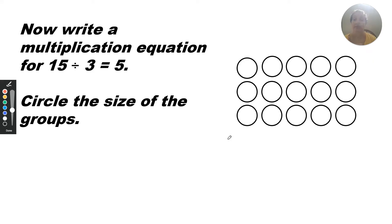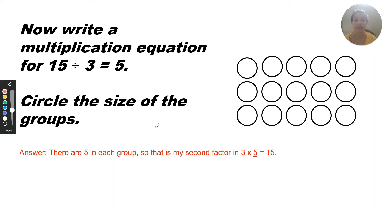Now write a multiplication equation for 15 divided by three equals five. Think about how the division equation is related to the multiplication equation. First, the number 15 is the total — in a multiplication equation, that would go at the end as the product. The three is how many groups, so that would go at the beginning, because we always say three groups of something. The multiplication symbol could also be read as 'groups of.' There are five in each group, so the second factor is five — that's the quotient in the division equation. The multiplication equation would be three times five equals 15.